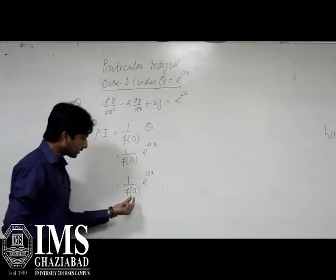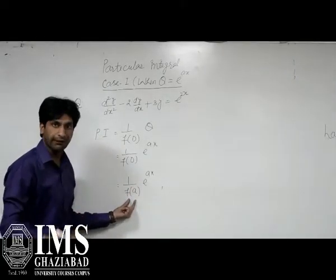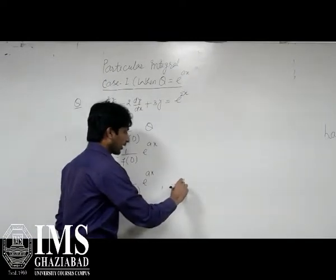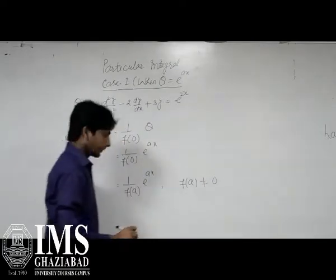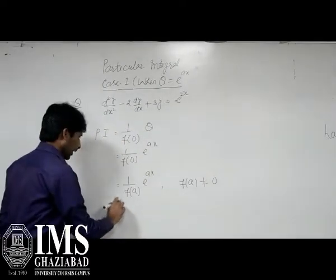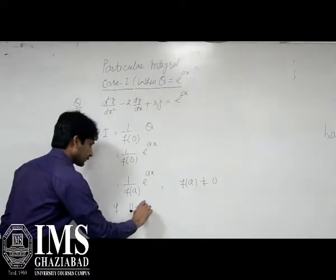But we remember that on putting D equals to a, the denominator cannot be undefined. That means the value of F(a) cannot be zero. If possible, suppose F(a) is equal to zero.